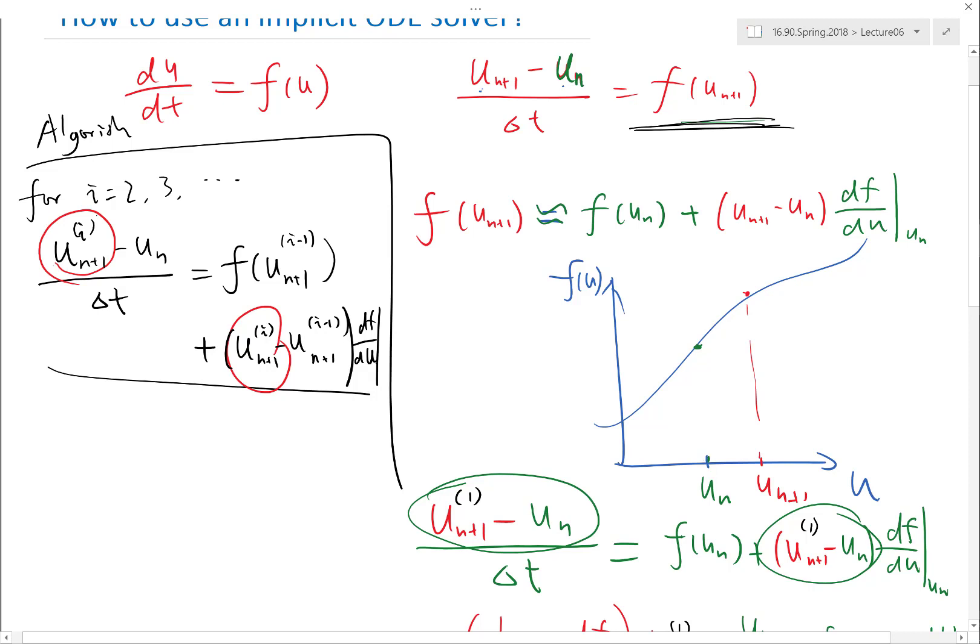So the way to know that is you have to do something called a line search. So you basically search the line between u_{i-1} and u_i to figure out is it better to stop halfway or is it better to go all the way to here, by computing how equal that formula is.